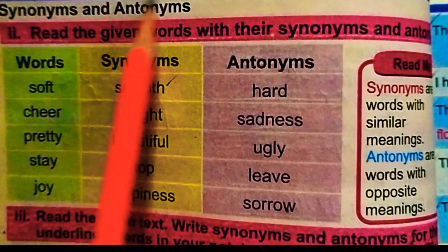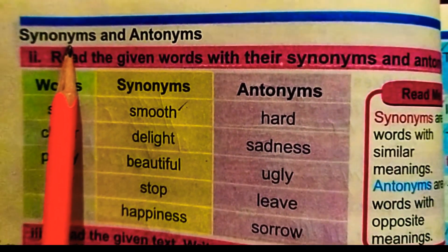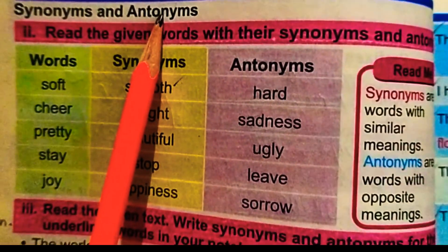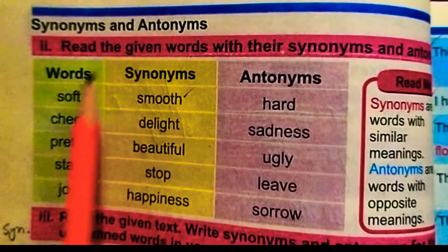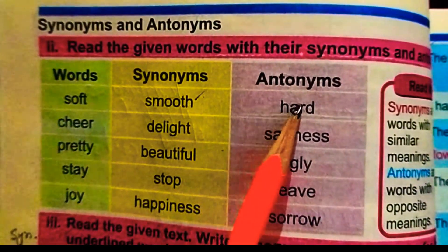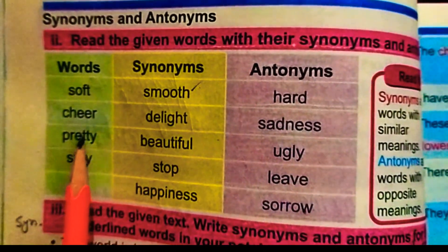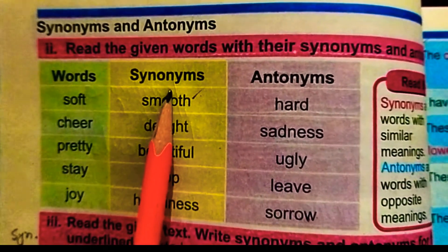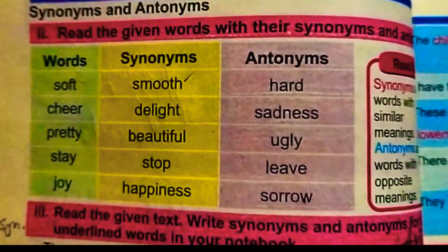Next: synonyms and antonyms. Synonyms are words with the same meaning. Antonyms are words with opposite meanings. For example, soft and hard are antonyms, while soft and smooth are synonyms. Now for the solution: the underlined words — happy's antonym is sad, and its synonym is joyful. Soft's antonym is hard, and its synonym is smooth.